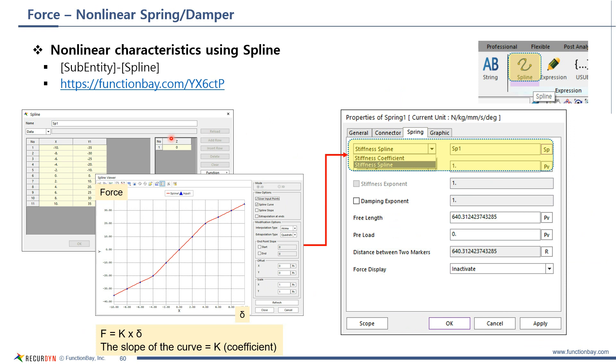Let me explain how to use nonlinear characteristics for spring force. First, create a spline curve. Please note that x-axis is delta and y-axis is a force. Y-axis is not stiffness coefficient. Then, use the stiffness spline option in spring dialog and select the spline curve you created. For details, please refer to the technical tips.